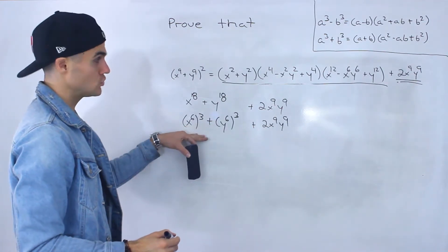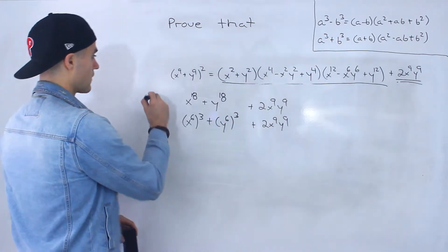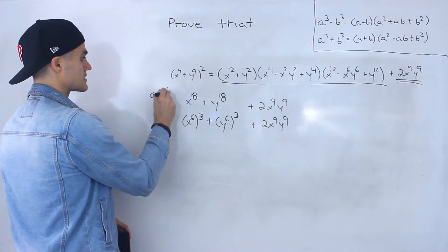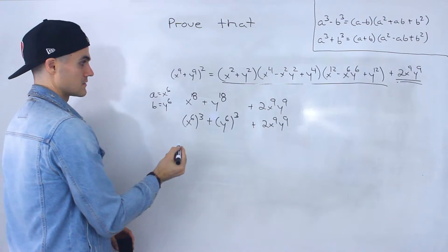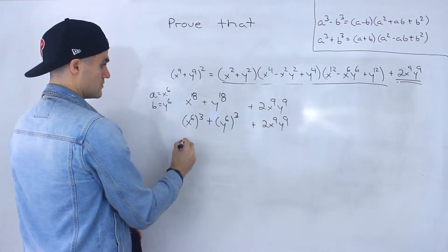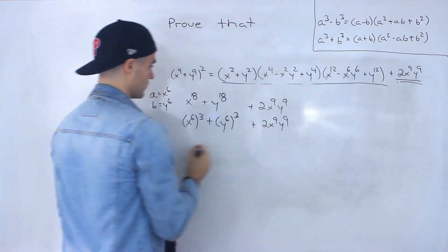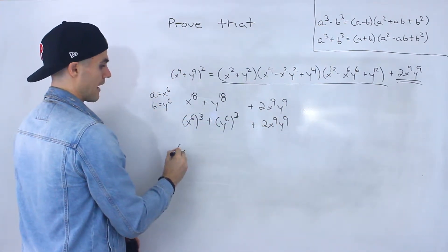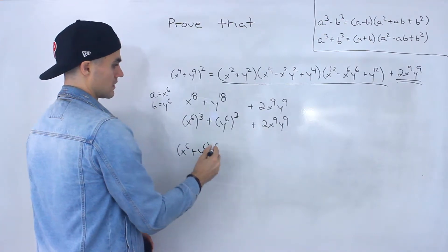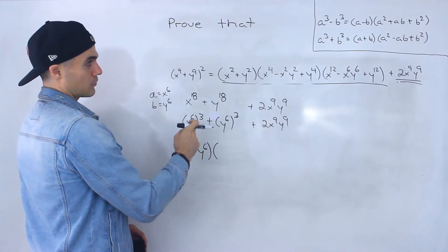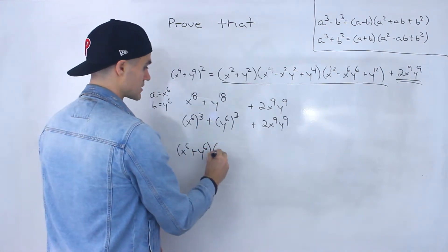Now notice that this is a sum of cubes, where the a value is x to the 6 and the b value is y to the 6. So if we take this a and b value and plug it into the sum of cubes formula, we would end up with x to the 6 plus y to the 6, and then a squared — so x to the 6 squared is x to the 12.